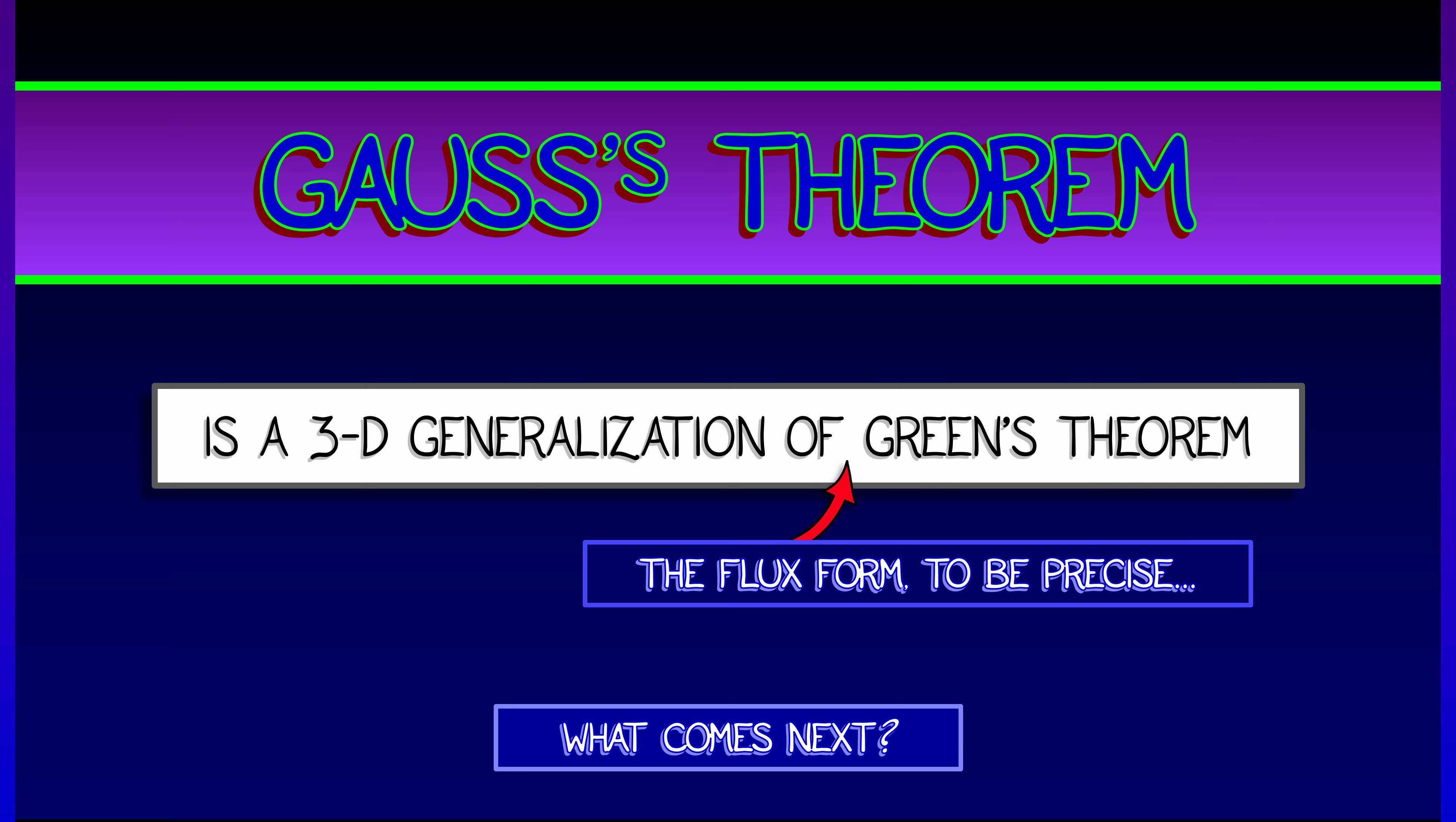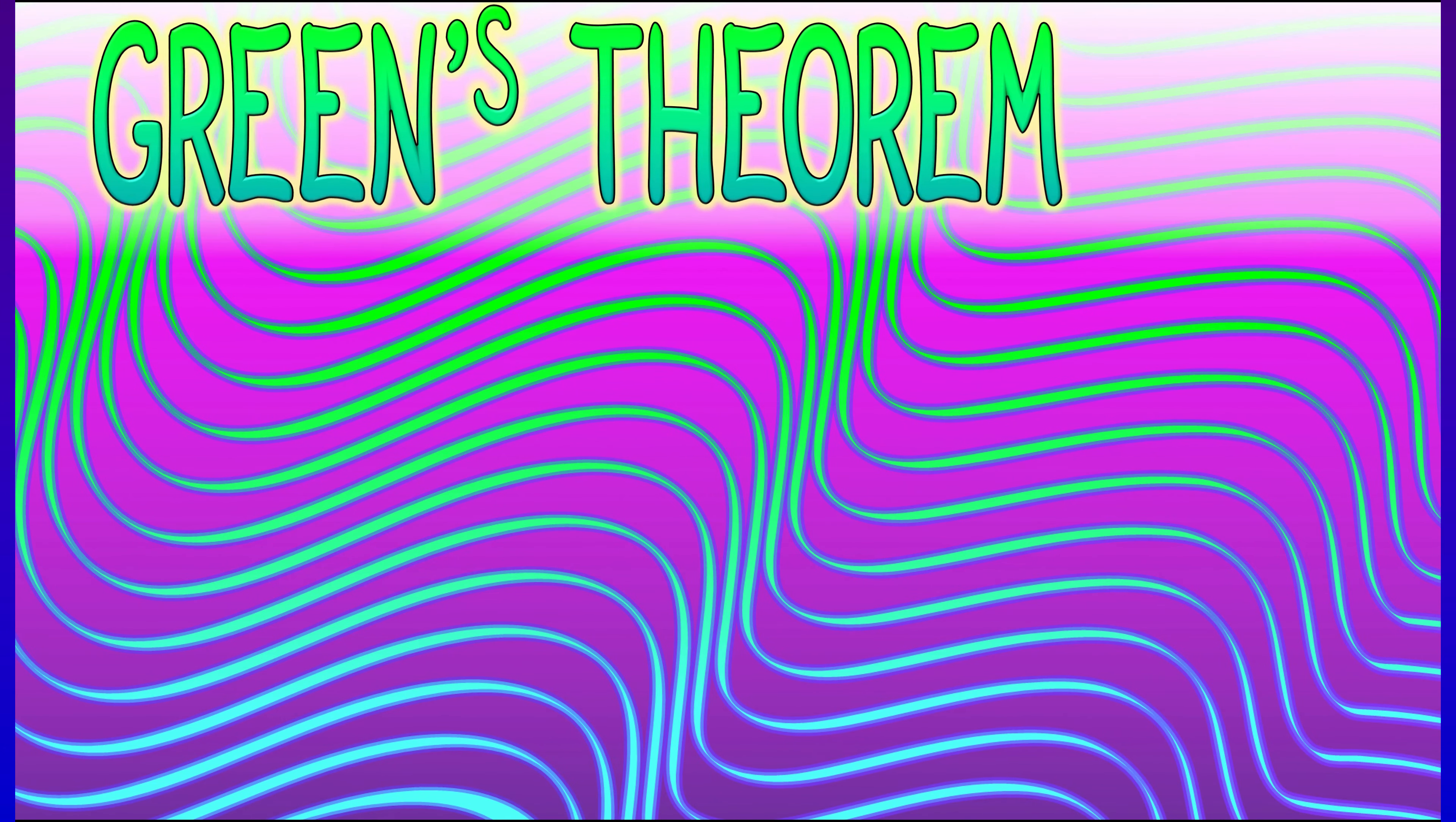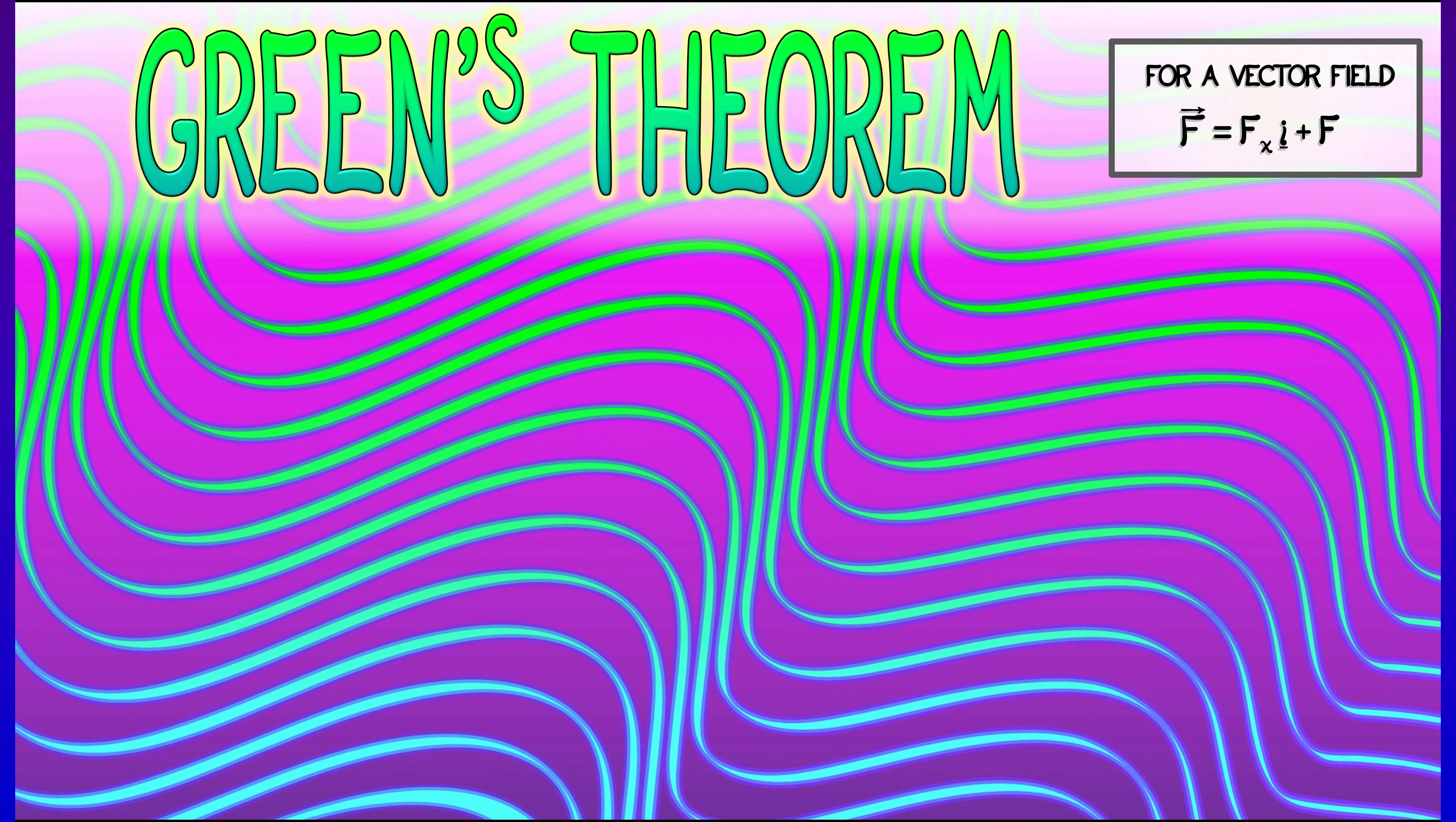So to answer the question of what comes next, let's go back, back to Green's theorem and examine this more carefully. Let's say we've got a vector field F in the plane, FX i plus FY j.